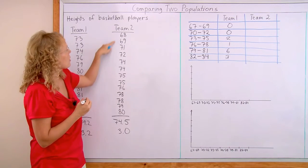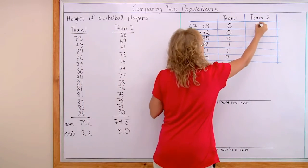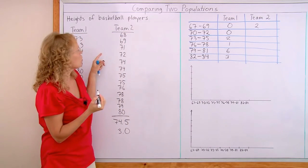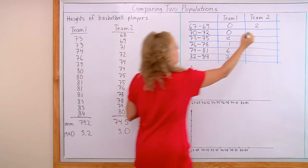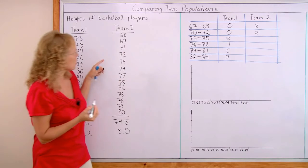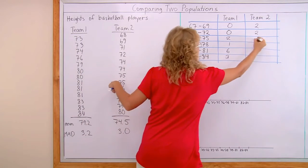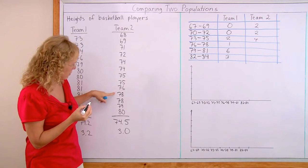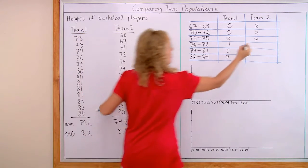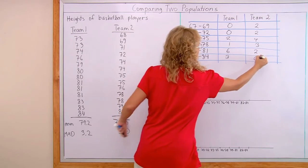67 to 69, that's 2. 70 to 72, 2. 73 to 75, 4. Then 76 to 78 is 3. And then 2 and 0.